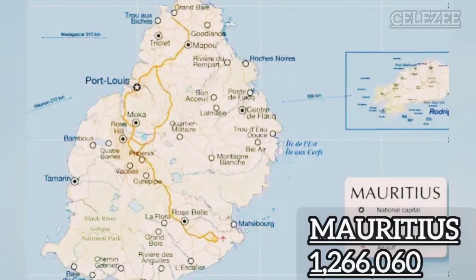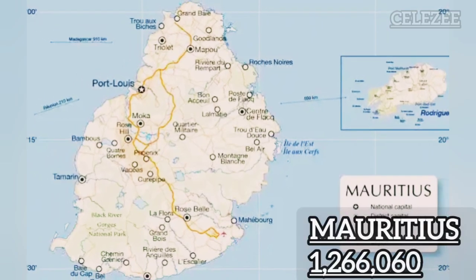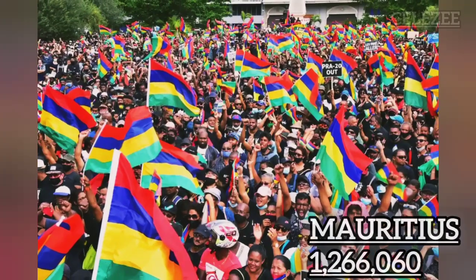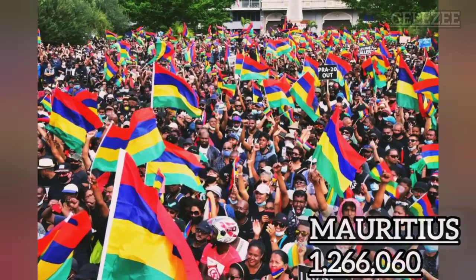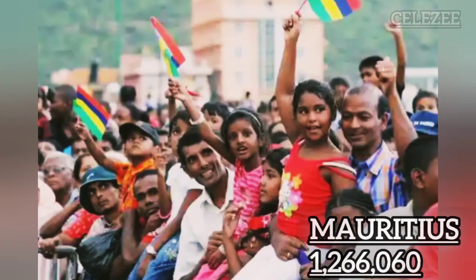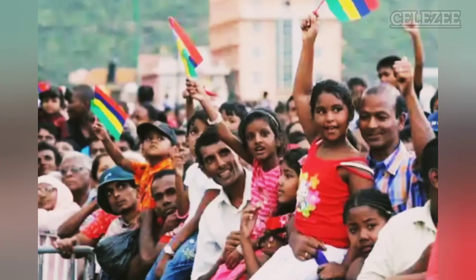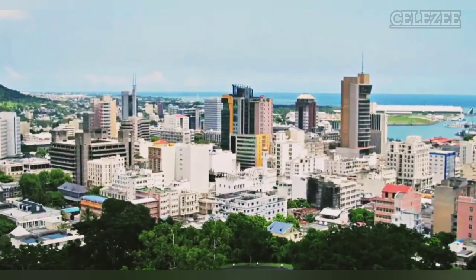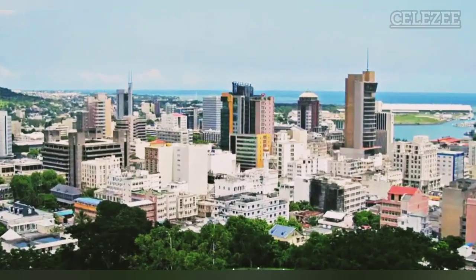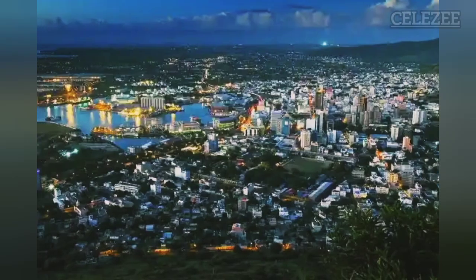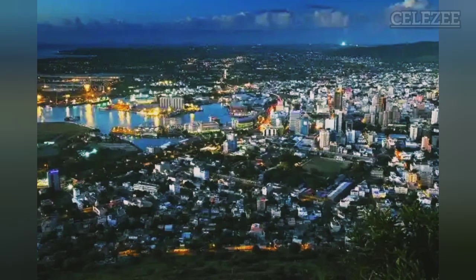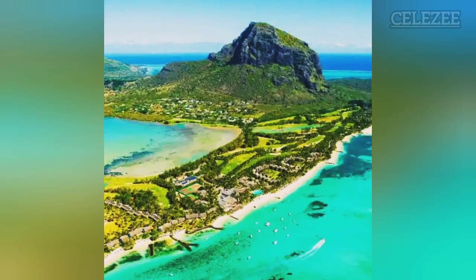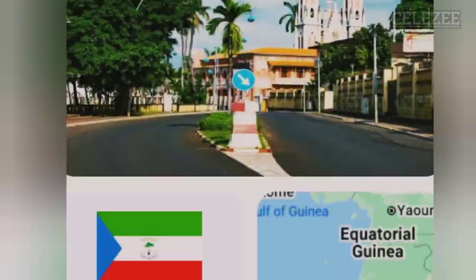Number 7: Mauritius. Mauritius, an island country in the Indian Ocean, has a population of 1,266,060. The majority of its citizens reside in the capital city, Port Louis. Mauritius is recognized as a prominent tourist destination and a financial trade center in Africa, standing out among other island nations on the continent.